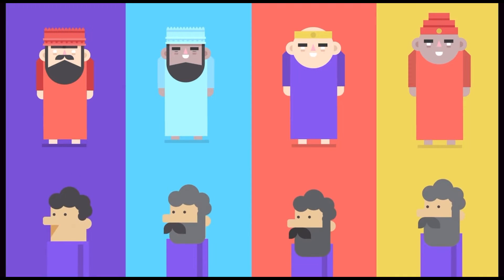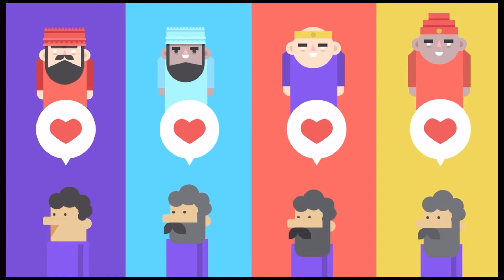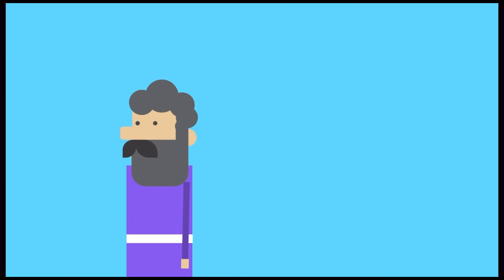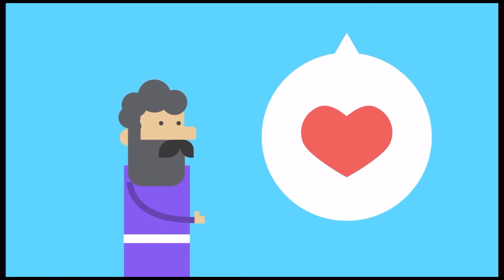Daniel served four important kings. And he followed God. But whenever it came down to obeying God or the king, Daniel chose God every time, no matter what. And even though Daniel had to do some really hard things, God was always with him. And that's the story of Daniel.